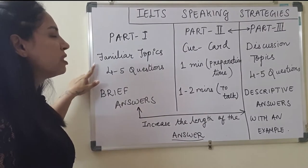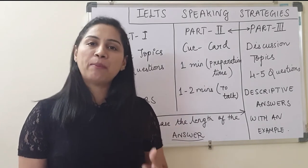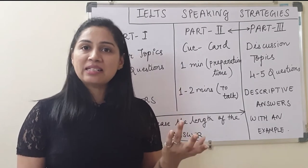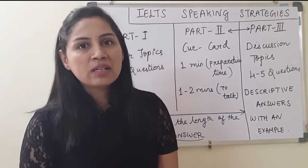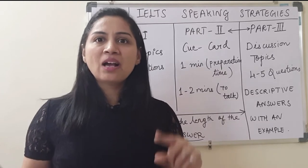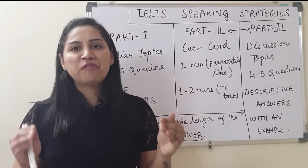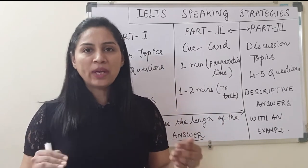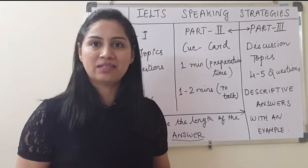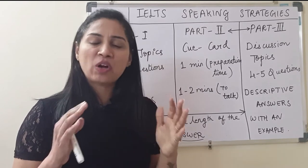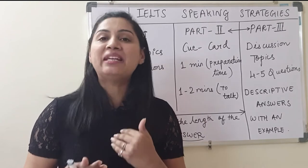Everyone knows that part 1 is related to familiar topics. Some familiar topics include work, study, music, sports, clothes, flowers, colours, neighbours, and hometown. These are topics in which every candidate can give their own answer based on the way they think about these particular topics, answering according to their own experiences.